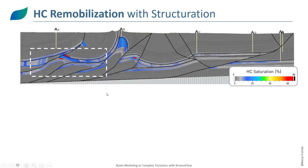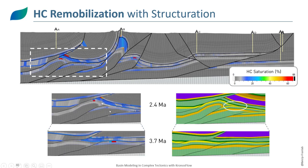Looking at the present-day state in more detail, we see main accumulations within anticline structures and underneath faults. What is very interesting is the remobilization and dismigration of hydrocarbons. At 3.7 million years, an accumulation within one block — corresponding to a reservoir — becomes connected to the top of a structure as blocks move, allowing dismigration and remobilization of hydrocarbons to migrate up to the top of the structure.